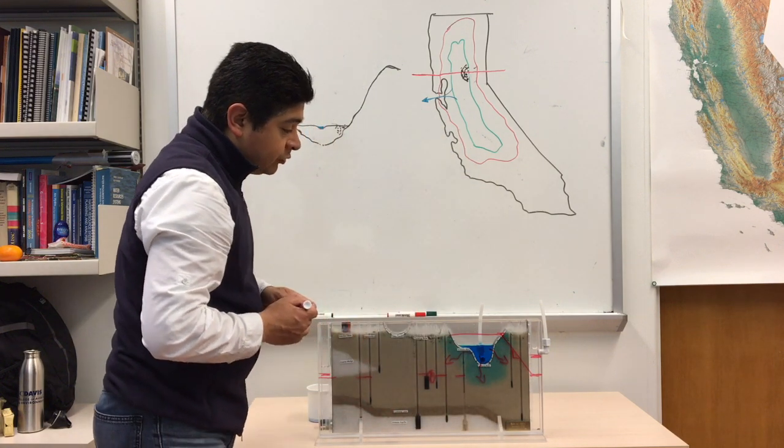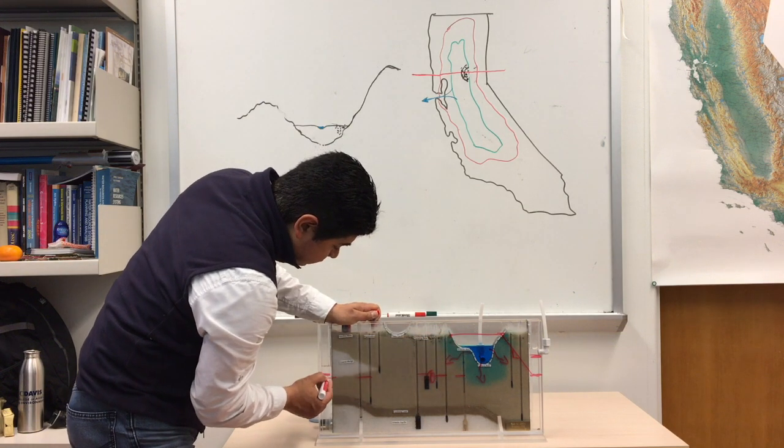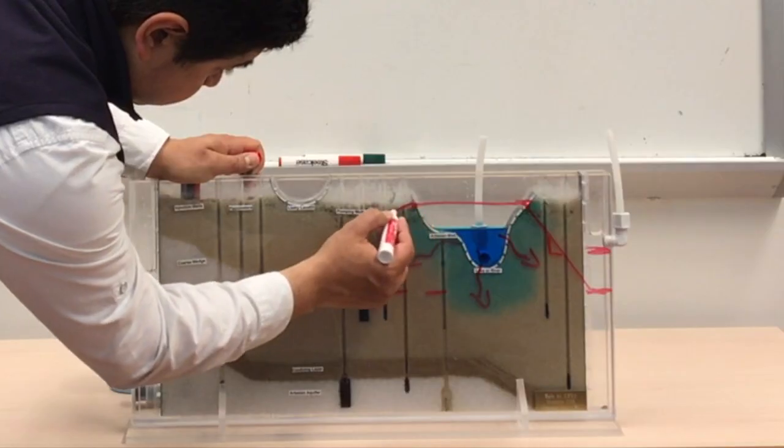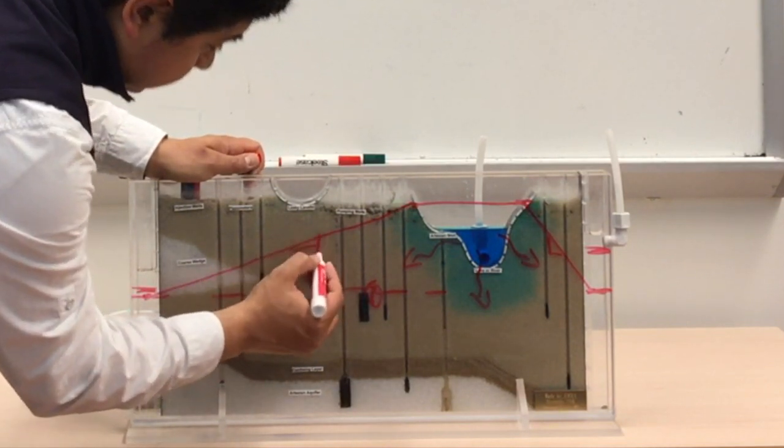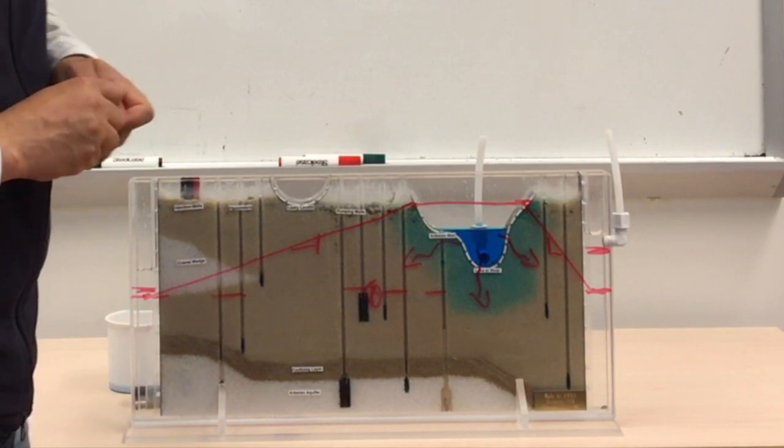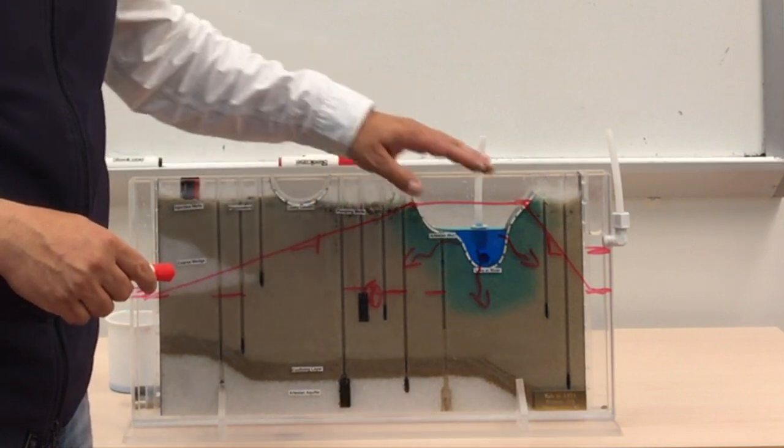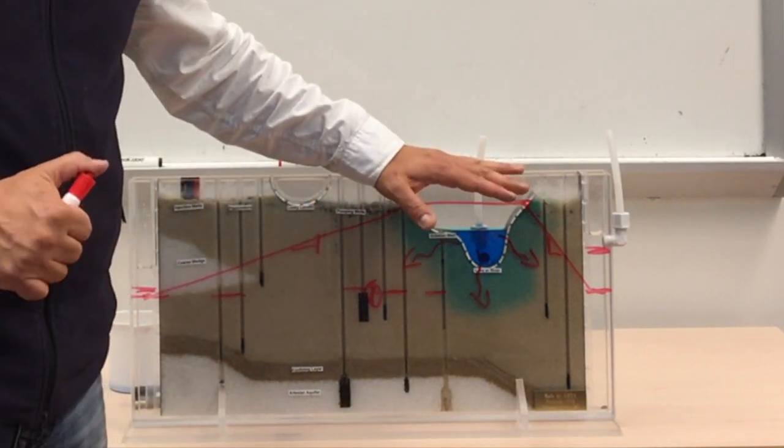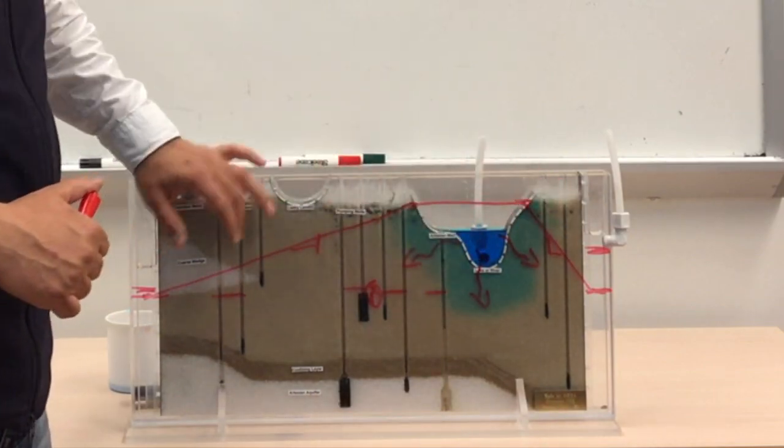Similarly, if we draw the slope of this initial condition with this initial condition, it will be something along these lines. As you can see, this slope was steeper than this other slope. That's why water was moving faster on the right side compared to the left side.